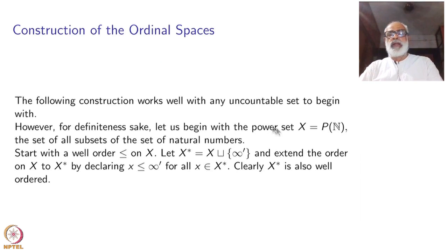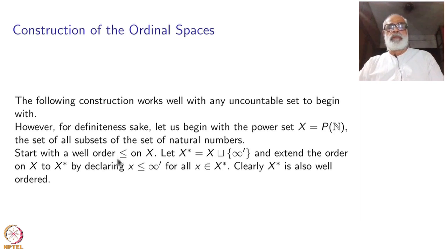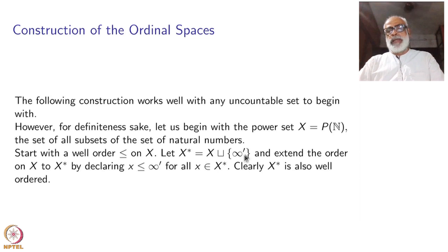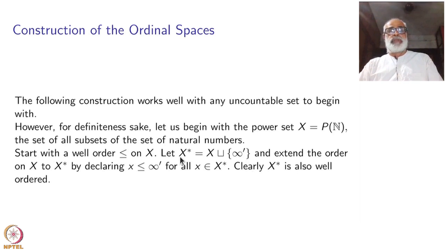Fix an uncountable set X. Start with a well-order — this is Zermelo's theorem that we have proved: every set can be well-ordered. Then add one more point, which I denote x_∞. Let X* = X ⊔ {x_∞}, and extend the order on X to X* by declaring that all elements of X are less than x_∞. That is automatically a well-order. Clearly, X* is also well-ordered, as we have seen with this extension.